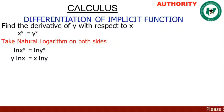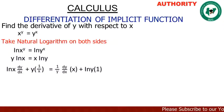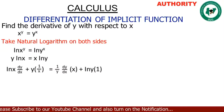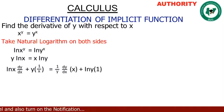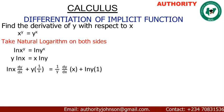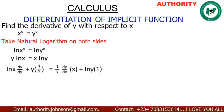Now differentiating both sides with respect to x. On the left side, y·ln(x) involves two functions, so we apply the product rule. The derivative of y gives dy/dx multiplied by ln(x), then plus the derivative of ln(x) which gives 1/x, times y.